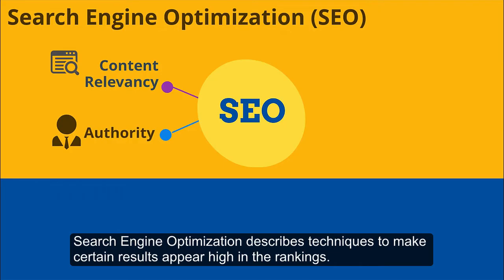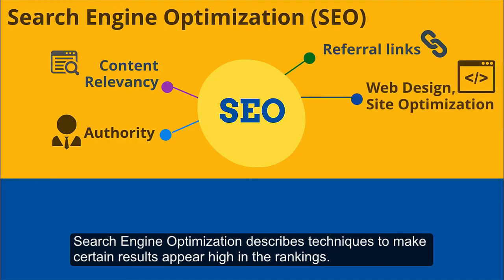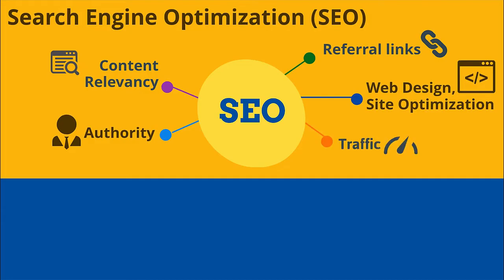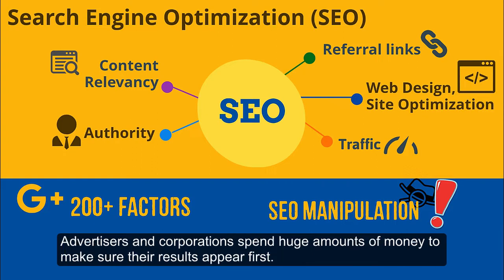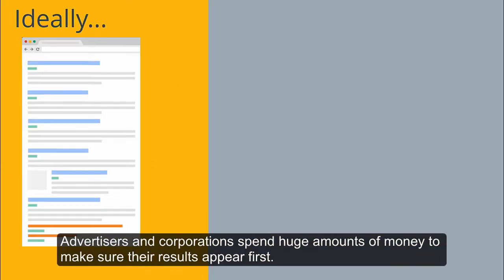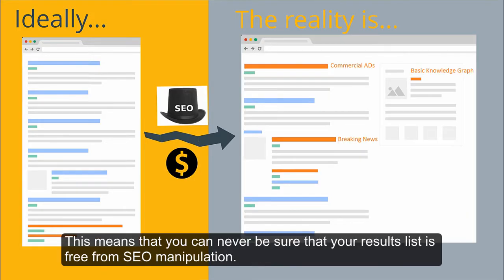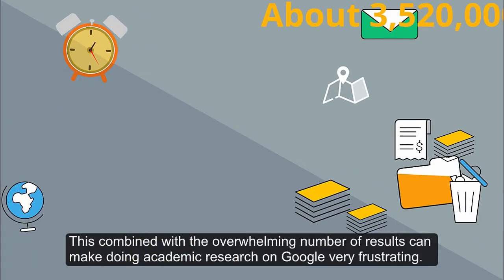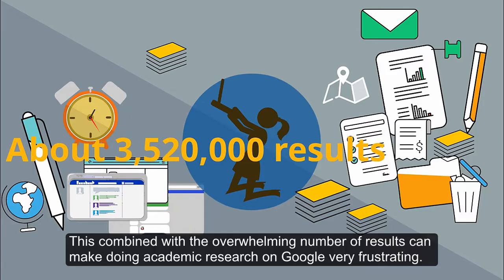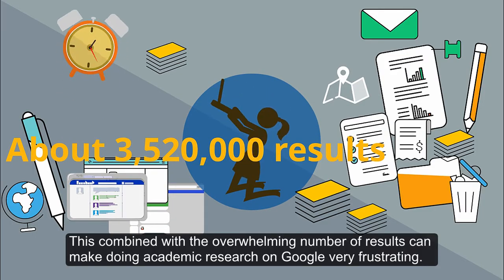Search engine optimization describes techniques to make certain results appear high in the rankings. Google considers over 200 different factors including how popular a site is among other websites. Advertisers and corporations spend huge amounts of money to make sure their results appear first. This means that you can never be sure that your results list is free from SEO manipulation.